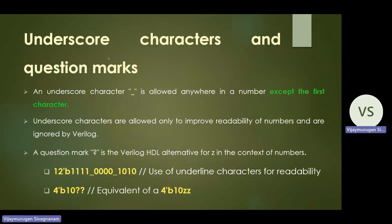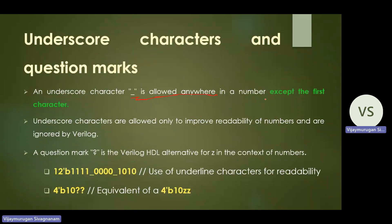Next, underscore characters and question marks can be used in Verilog HDL in many places. An underscore character is allowed anywhere in a number except as the first character. Underscores are used only to improve the readability of numbers and are ignored by Verilog. The question mark symbol in Verilog HDL is an alternative representation for 'z', which is the high-impedance value.